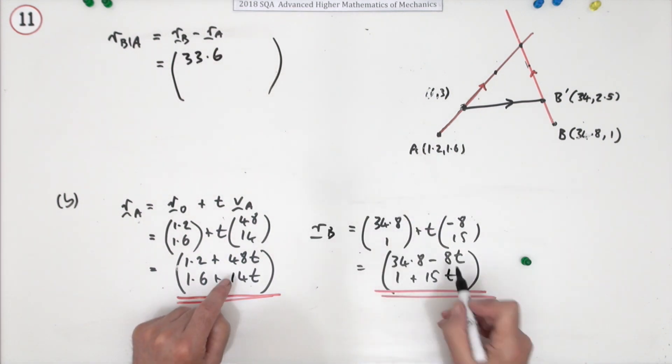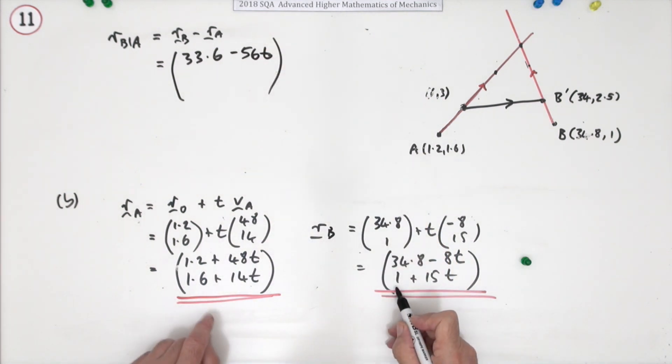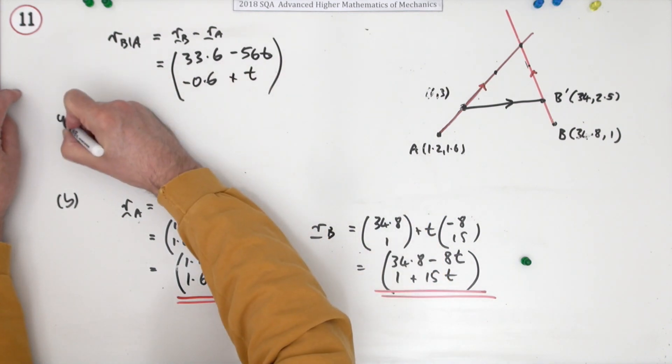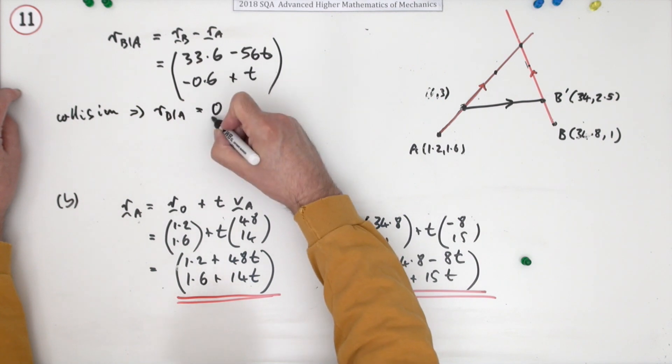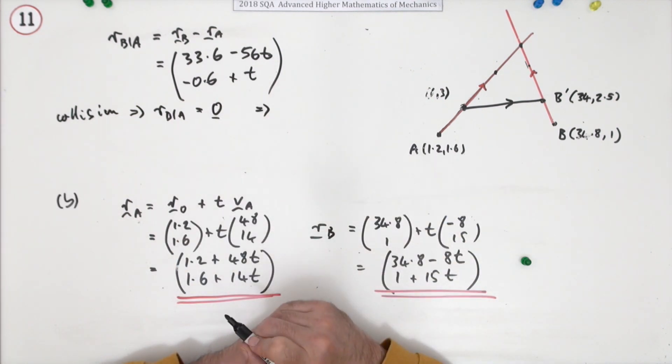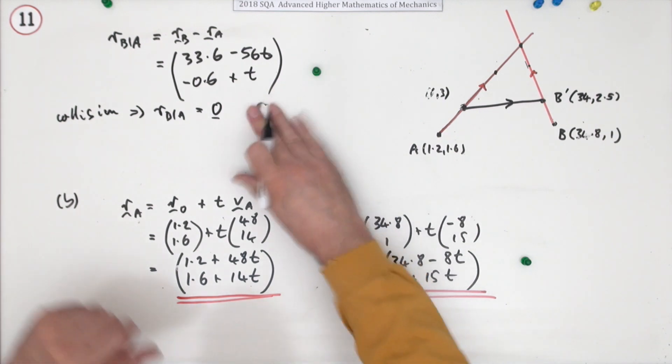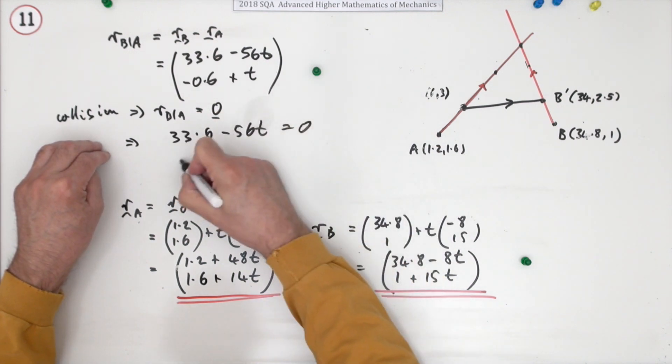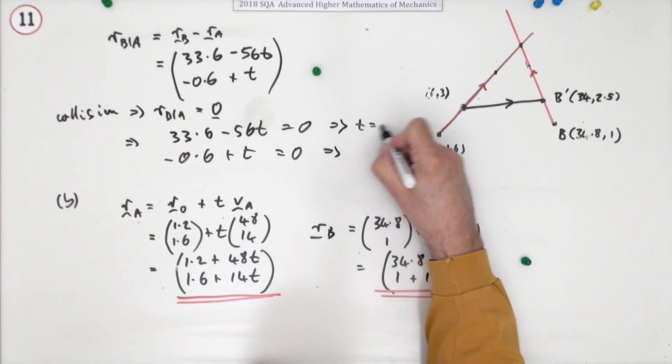I'm just going to keep it in this form because it gets a bit messy with all the i's and j's. So that would be 34.8 take away that, that's 33.6, and this part here would be negative 56t, and this part here is going to be negative 0.6 plus t. And they would collide if that equals 0. Collision means r_B relative to A equals the 0 vector. So that would mean that 33.6 - 56t should equal 0 and that -0.6 + t should equal 0, and in both cases because it was the same calculation, t would equal 0.6.